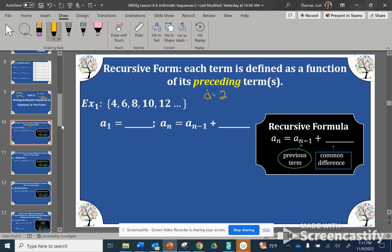The recursive form or formula simply just tells us what the common difference is. Each term is defined as a function of its preceding term. So in this blank will be our common difference. So this is the recursive form, a sub n equals. This notation just means if I know the previous term and I add the common difference, I can find or determine the current term.